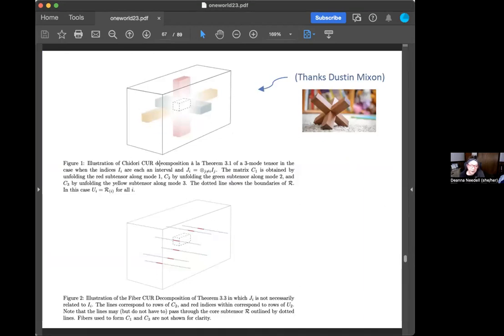This is first the Chidori CUR decomposition, which in our picture looks a lot like this toy game, which is a Chidori game. Thanks to Dustin Mixon for noting that, and that's how we gave it its name. What we're doing here is we're taking these three different colored subtensors—the red, the pink, and the yellow—and we're obtaining the C1 matrix. This is part of the column matrix by unfolding this red subtensor along mode one. We're forming C2, the second column matrix, by unfolding the green subtensor and so on. This dotted line shows the boundaries of the core tensor R. Then we build the decomposition that way.